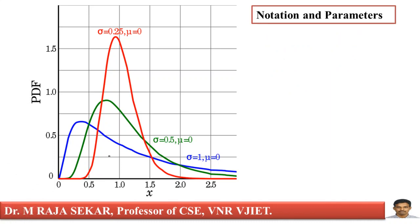This is a continuous distribution, so it has a probability density function (PDF). Looking at the PDF plot, the red curve has mu equal to zero and sigma equal to 0.25.